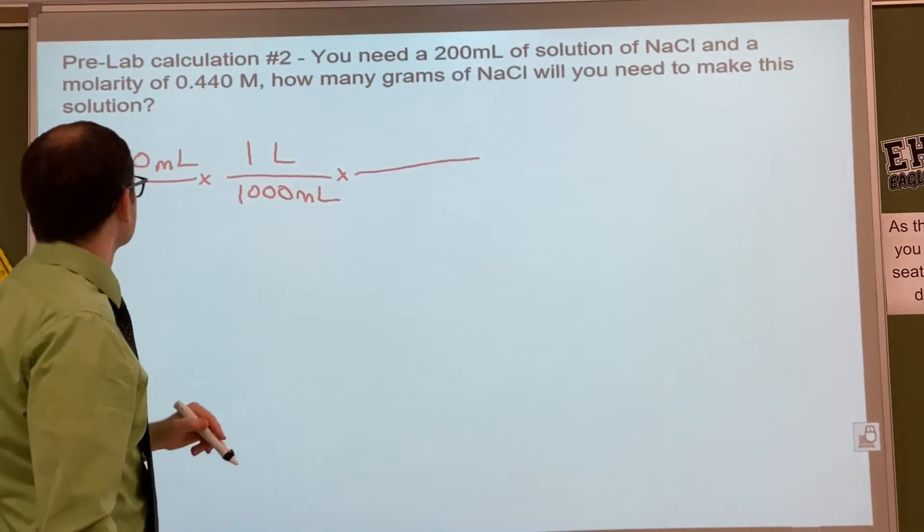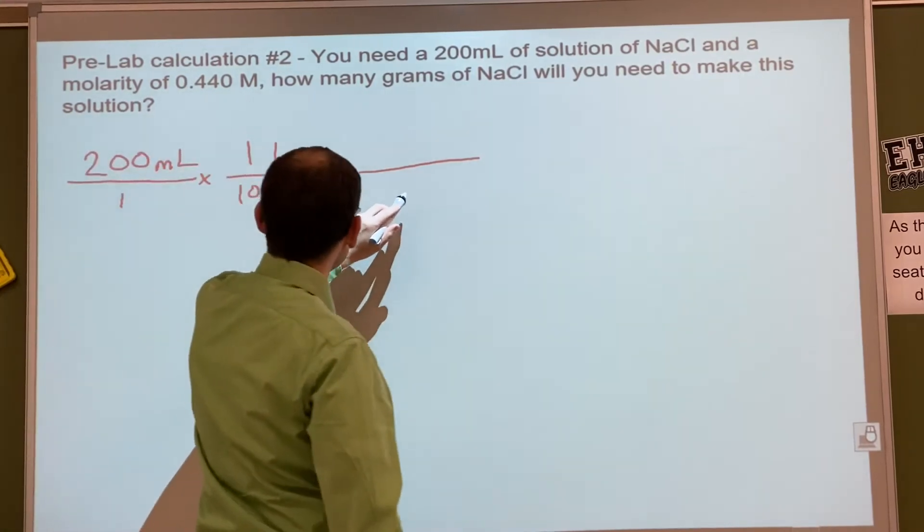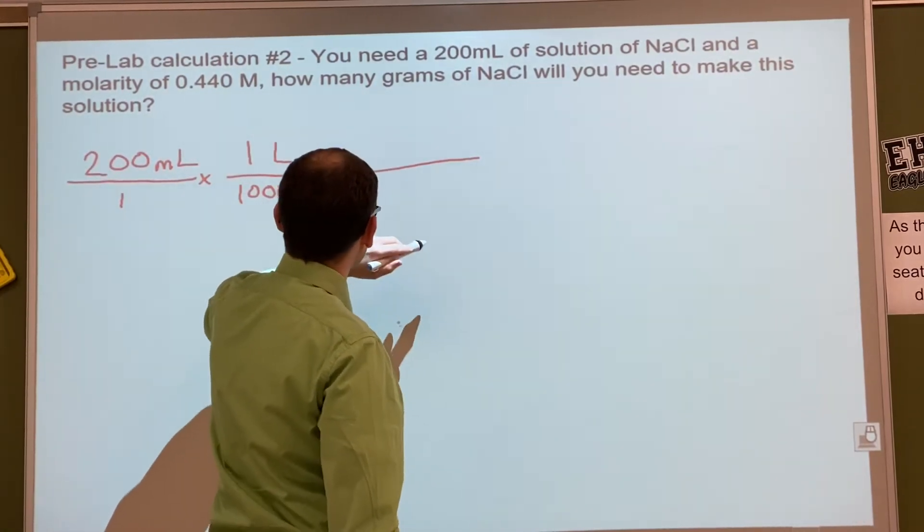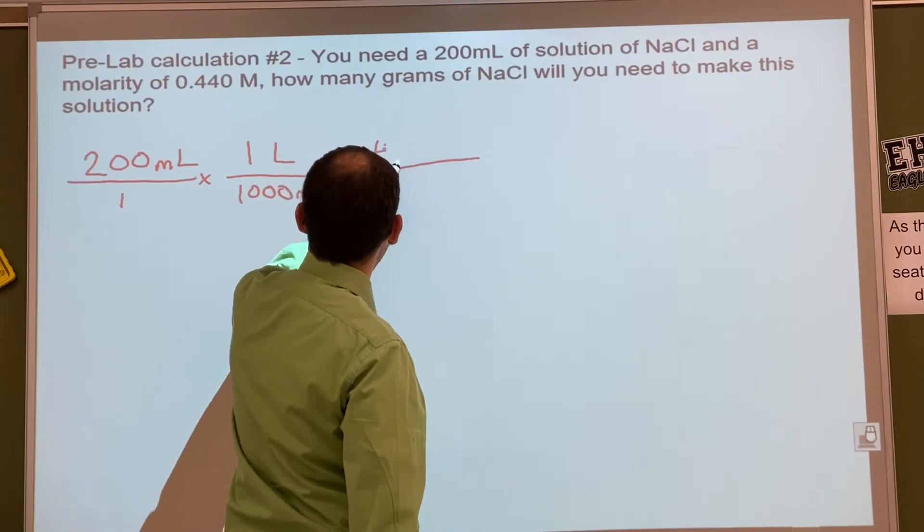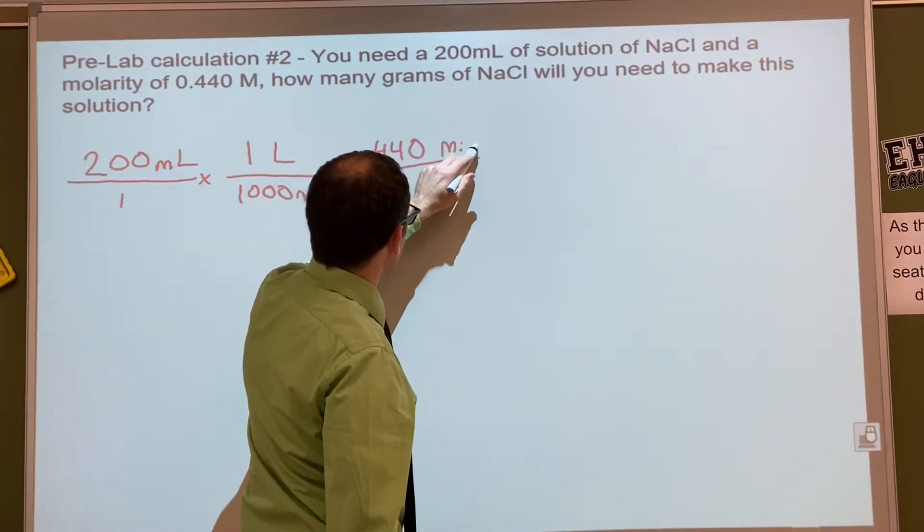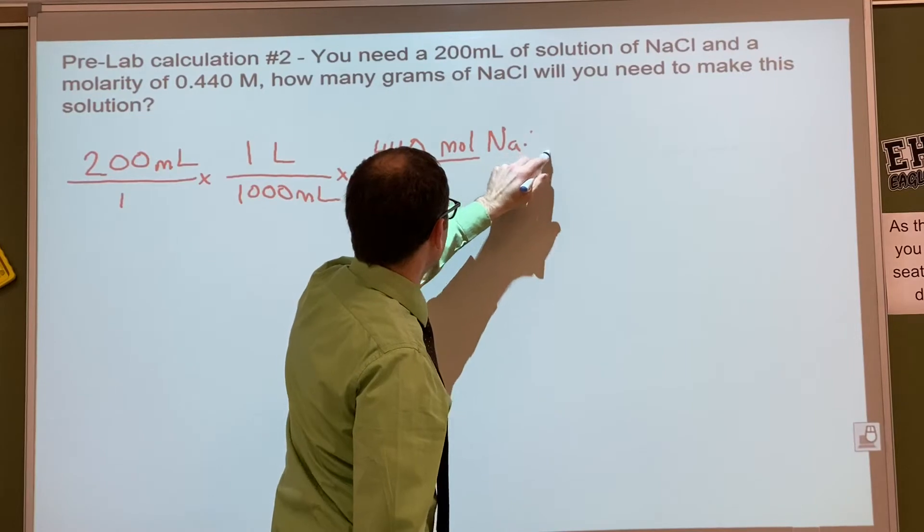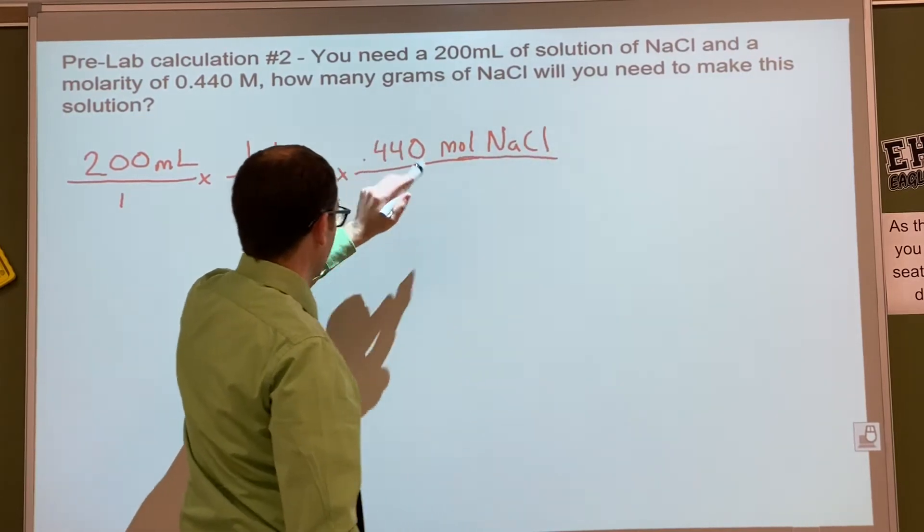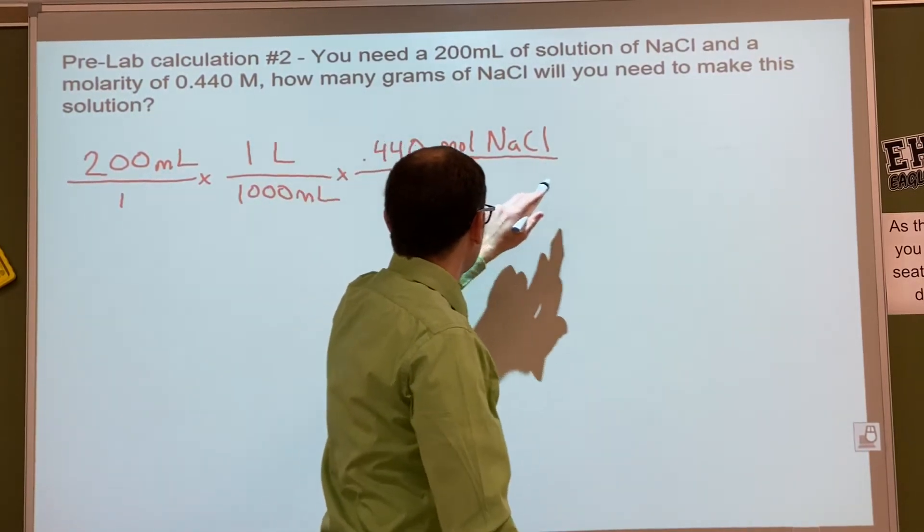Then what do we do? Where does that go, on the top or the bottom? Top. Top, good, because it's 0.440 what? Moles. Good, NaCl. And on the bottom? One liter. One liter, good.